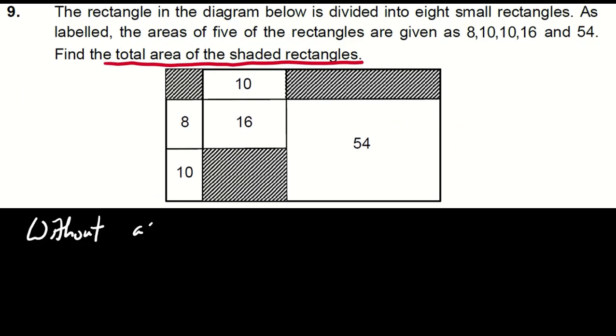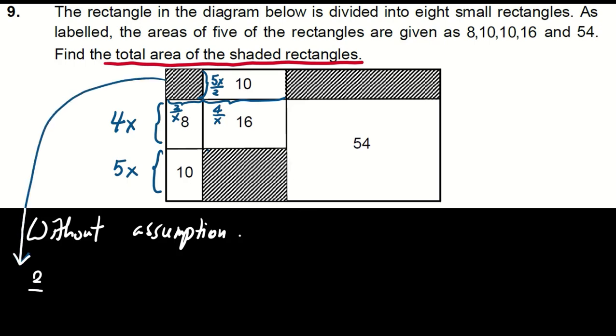Next, without guessing, we noticed that the ratio of 8 to 10 is the same as 4 to 5. So we can say that these lengths are 4x and 5x as shown. For the rectangle with the area of 16, its size is 4x by 4 divided by x. For the rectangle with an area of 8, its size is 4x by 2 divided by x. And for the rectangle with the area of 10, its size is 4 over x by 5x over 2. This means the area of the top left rectangle, 2 over x times 5x over 2 is 5. And the area of the bottom rectangle, 4 over x times 5x equals 20.